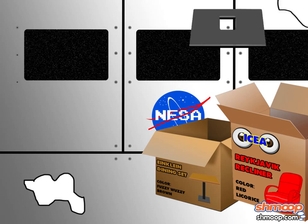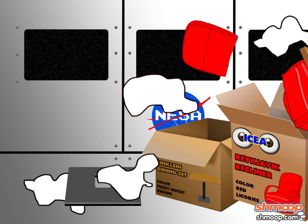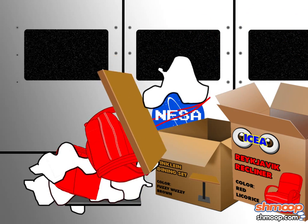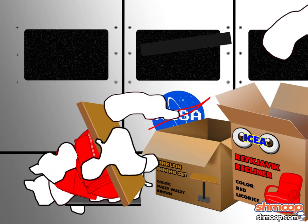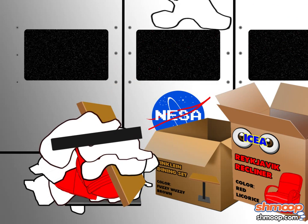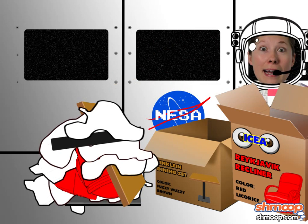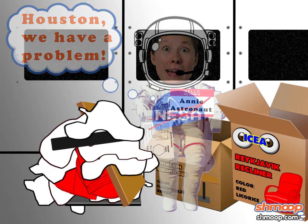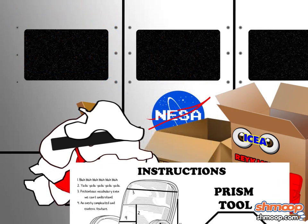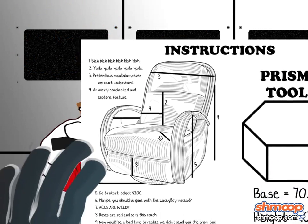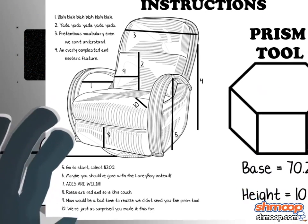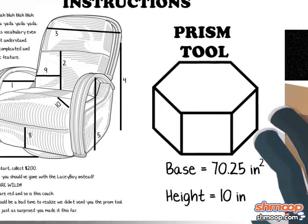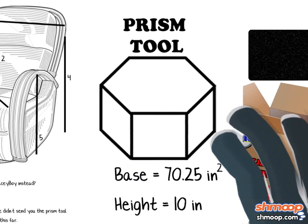However, once they opened the hundreds of individually packaged parts, they realized the special Swedish tool was missing. Rather than make an Earth landing to return the furniture, the astronauts decided to make a replacement tool.